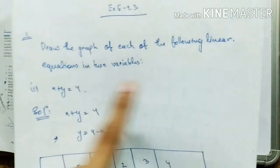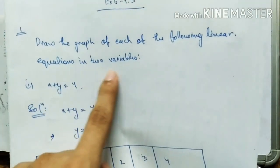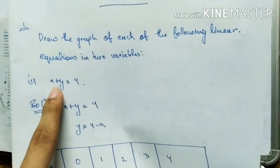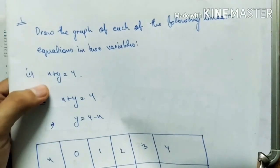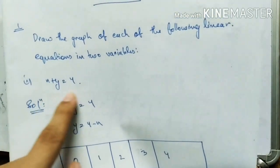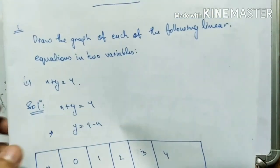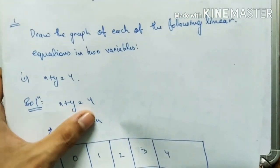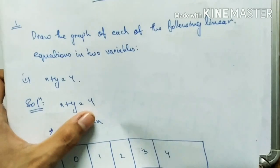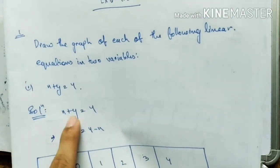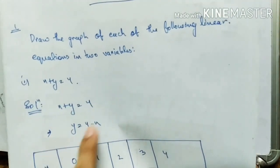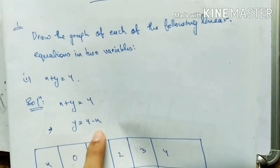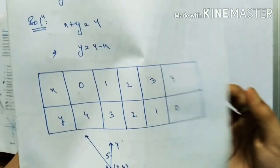The first equation is x plus y equals 4. To draw the graph of this equation, I will rearrange it. If I send x to the other side, I will get y equals 4 minus x. Now I will draw a table of values.